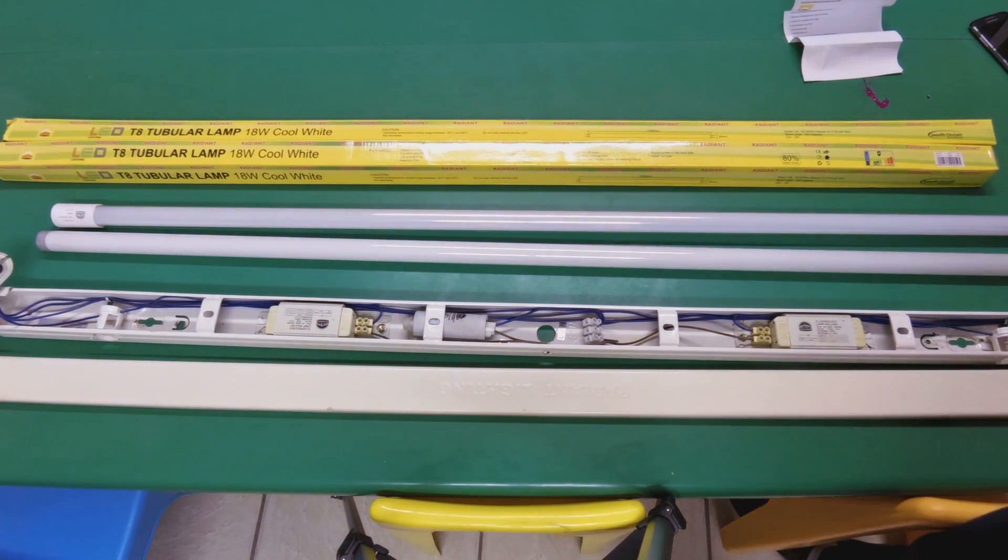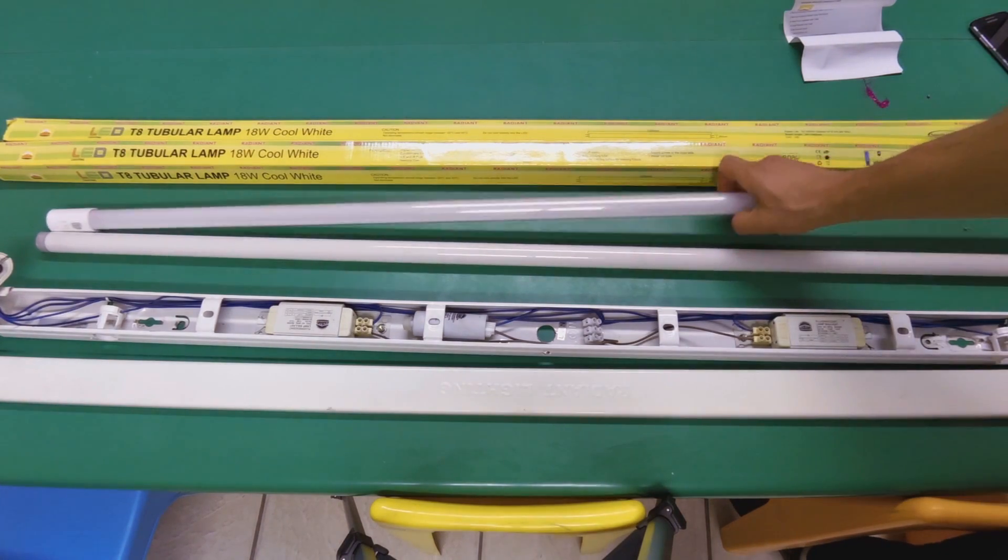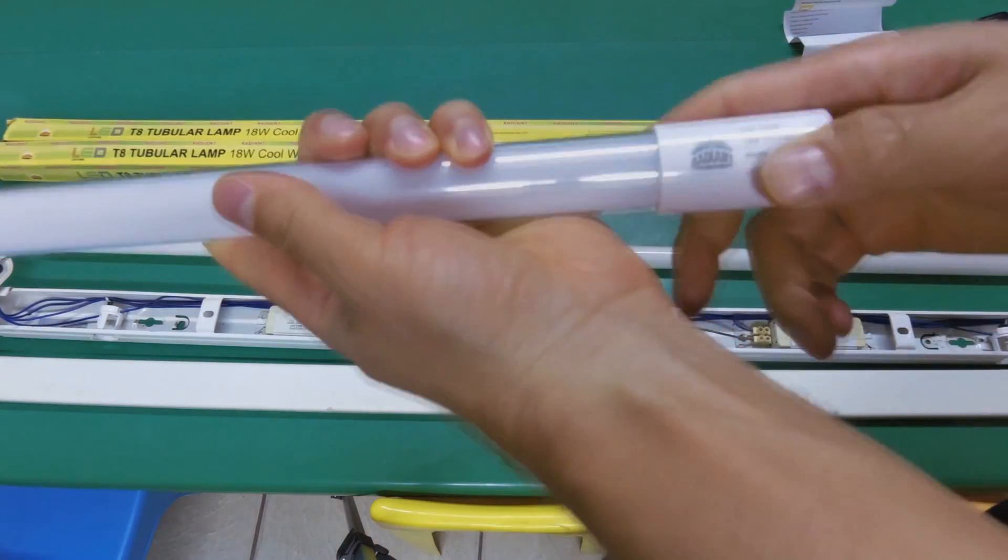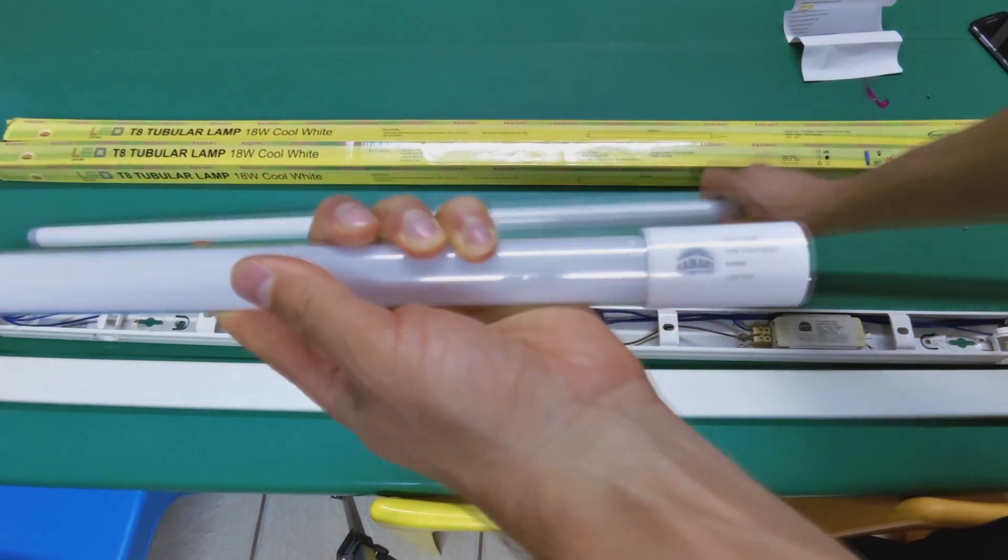And do all 18-watt LED tubes have 1440 lumens? No, it depends on the manufacturer and how they were made. So in the case of this tube, I should expect to get quite a saving. It is literally 50% saving because this is 35 watts and the LED is 18 watts per tube.